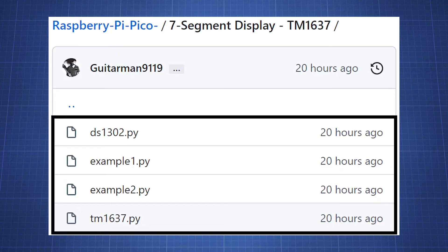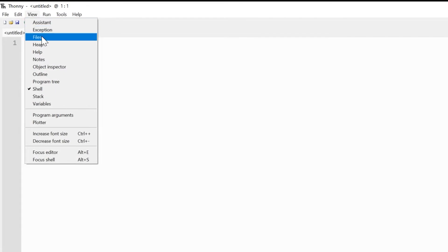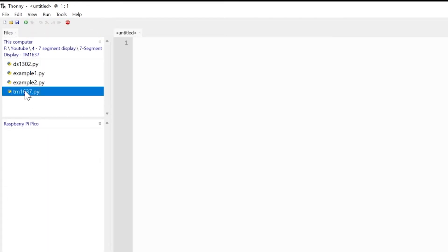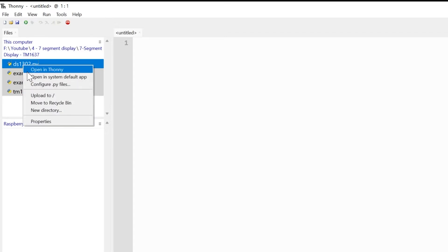Download all the files to your computer and in Thonny click on view files and navigate to the downloaded files. Highlight the four files and upload it to your Pico.